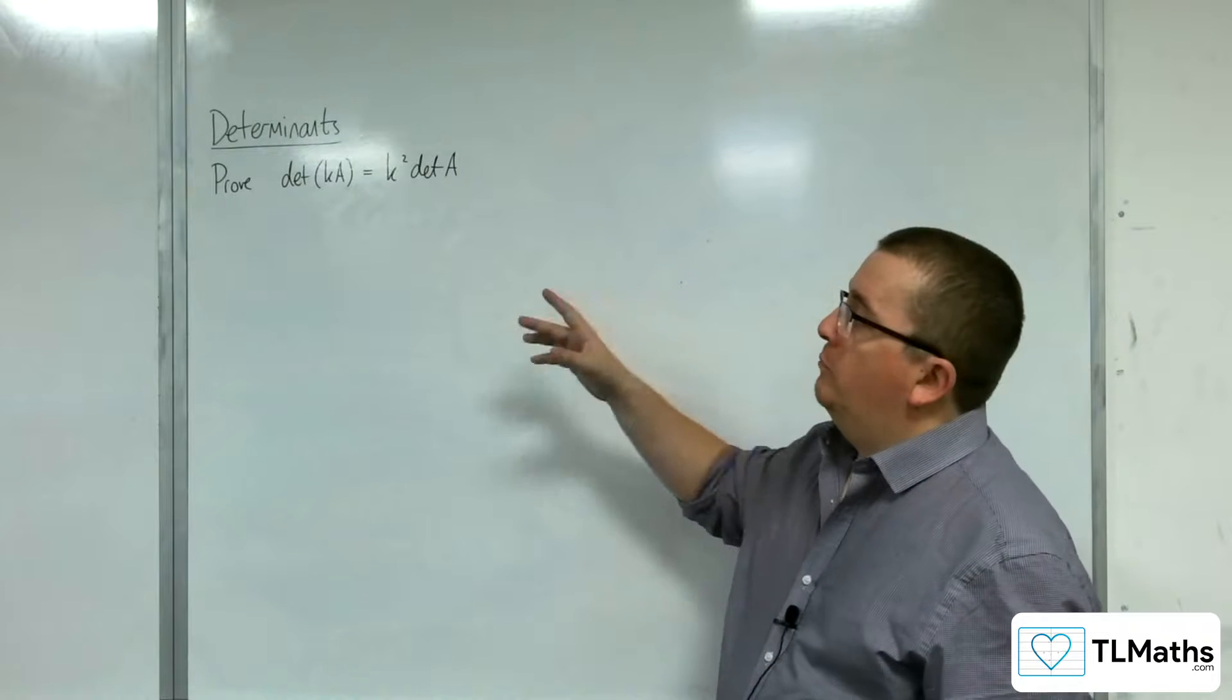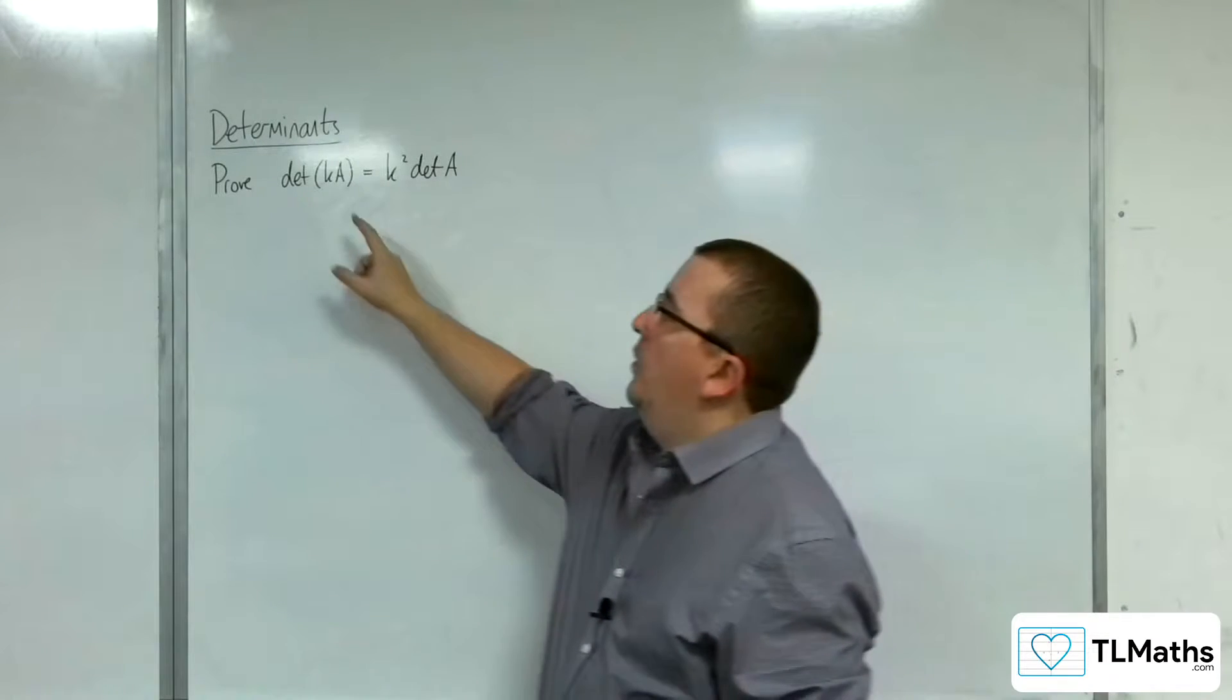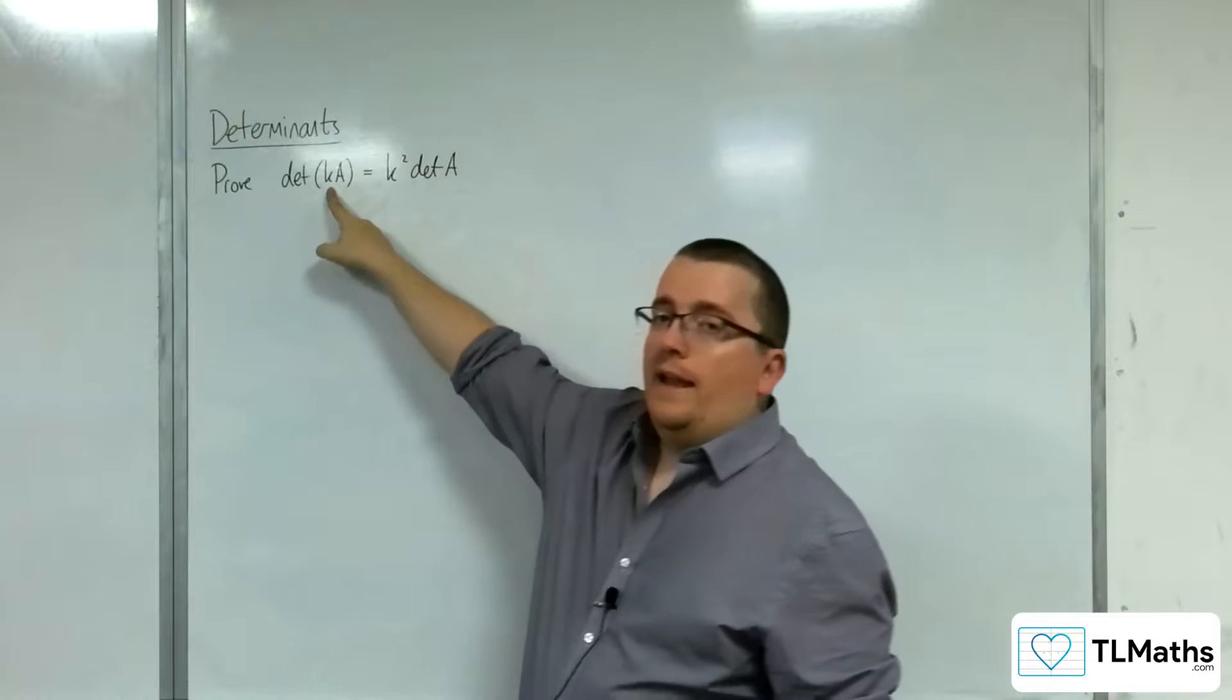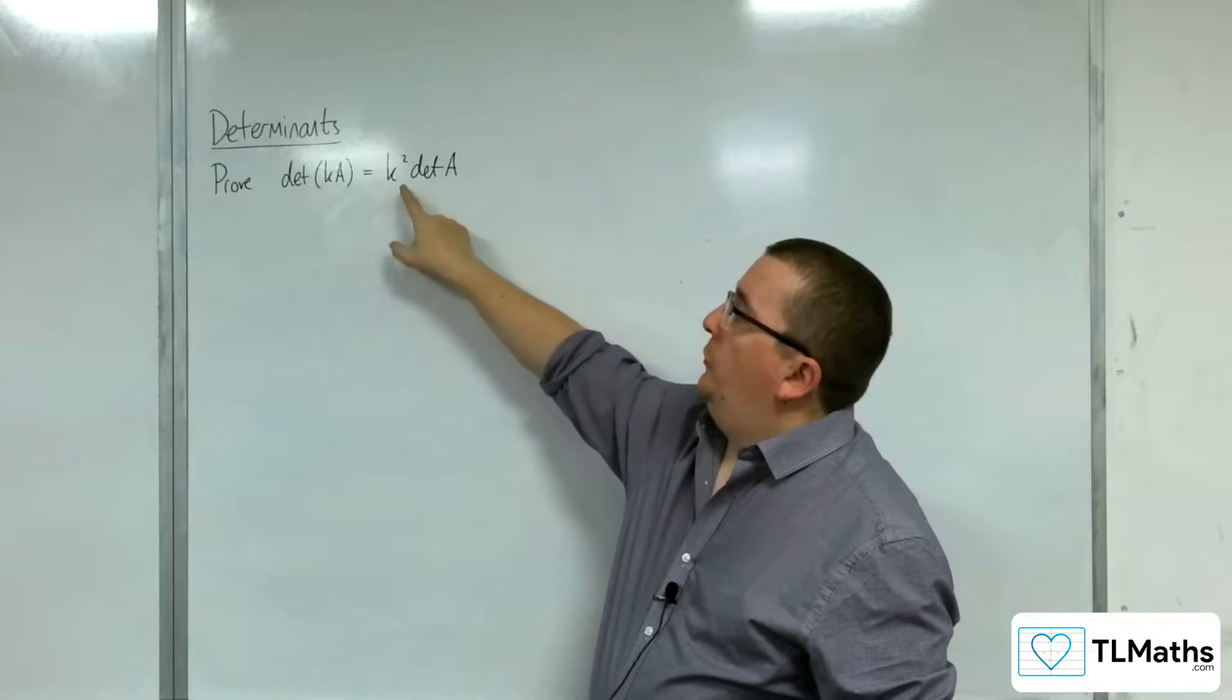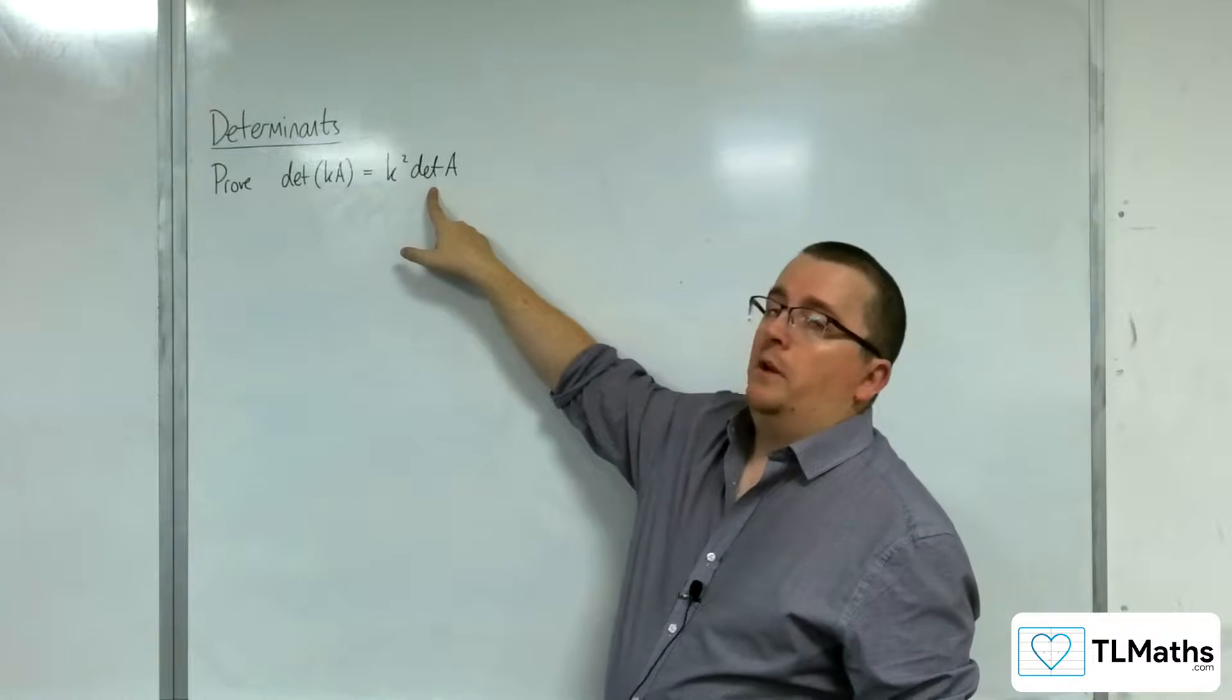Another useful result that we're going to prove here is that the determinant of k times A, where k is a constant, is equal to k squared times the determinant of A.